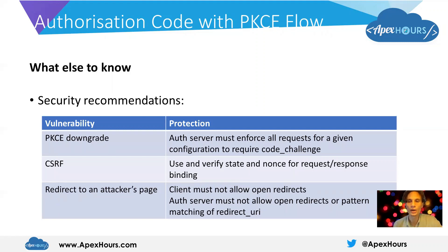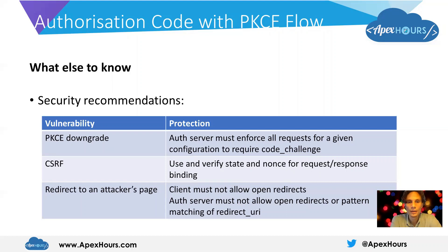In addition to PKCE, the state parameter can be used to protect against cross-site request forgery in the authorization code request. A nonce can also be implemented as a secure way of binding the ID token to the initial request, providing additional protection against certain attacks — generally a good idea when using this flow as part of an OpenID Connect mechanism. Open redirects and pattern matching within redirect URIs should also be avoided as these have historically introduced vulnerabilities.